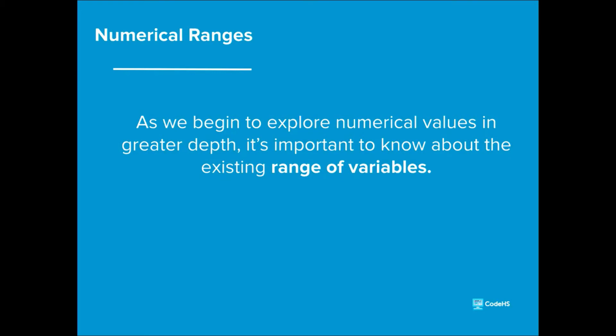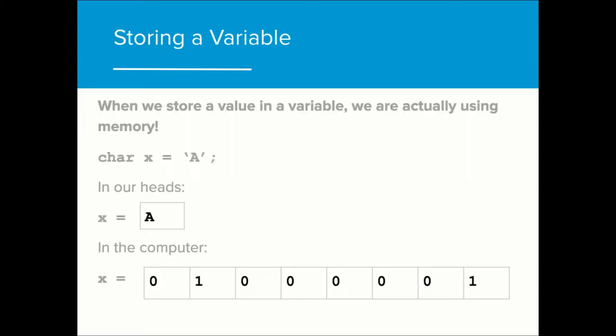As we begin to explore numerical values in greater depth, it's important to know about the existing range of variables. As discussed in lesson 1.2, when we assign a value to a variable, we are actually associating that variable with binary data. Computers store all data in binary, and associate that variable with the binary data associated with the value that it has been assigned.